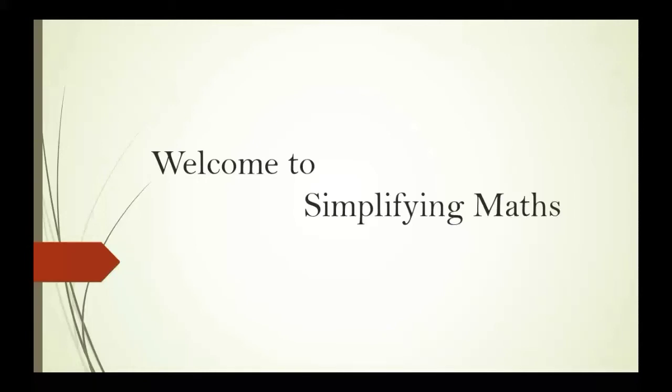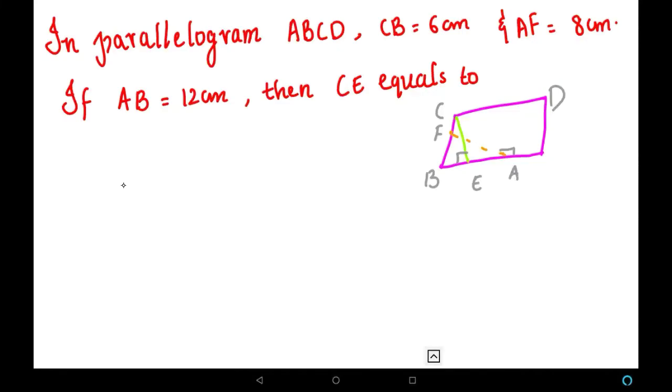Friends, welcome to Simplifying Maths. We are going to solve the problem that is, in a parallelogram ABCD, CB is equal to 6 centimeters, AF is equal to 8 centimeters. If AB is equal to 12 centimeters, then CE equals...